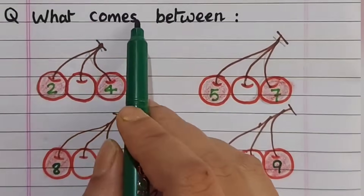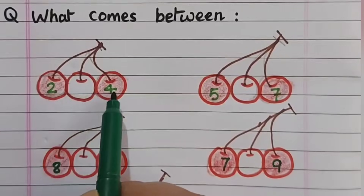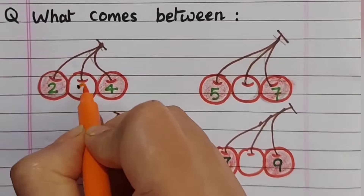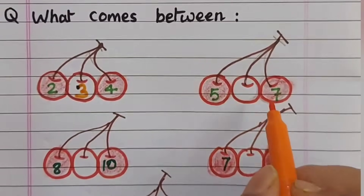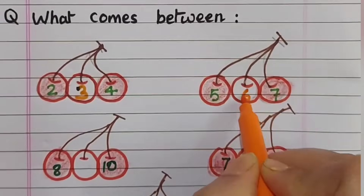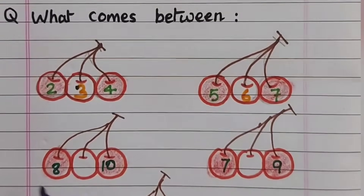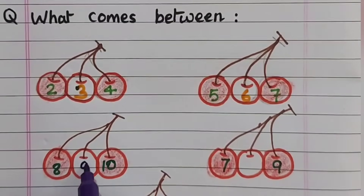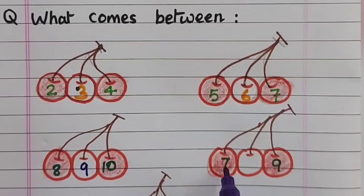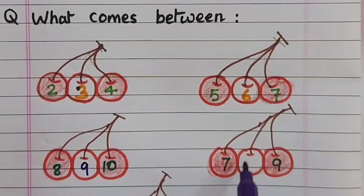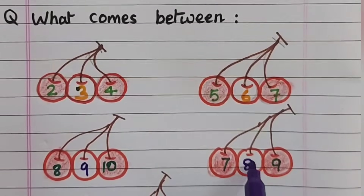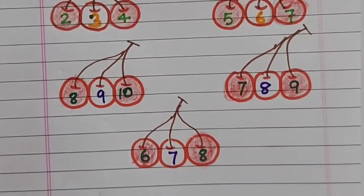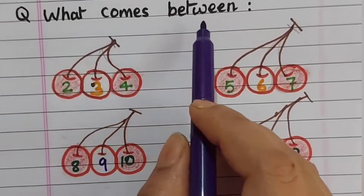Next: what comes between? Two is given and four is given — three comes between. Five, six, seven — six is between. Eight, nine, ten — nine is missing between eight and ten. Seven, eight, nine — eight is between seven and nine. Six, seven, eight — seven is between six and eight.